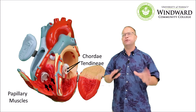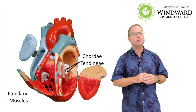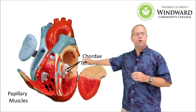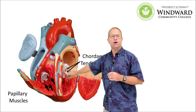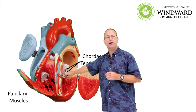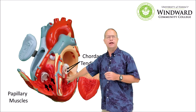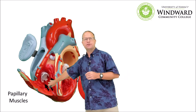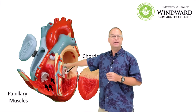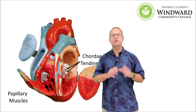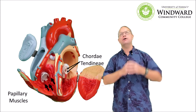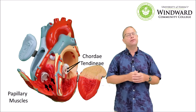Now let's go back to the atrioventricular valves and look at some anatomy we didn't point out before — these are called chordae tendineae. The chordae tendineae, or tendinous cords, are small connective tissue fibers that connect the valves to the heart muscle. The areas where they connect on the muscles are called papillary muscles — little nipple-like muscles that attach to these chordae tendineae, which literally means heartstrings.